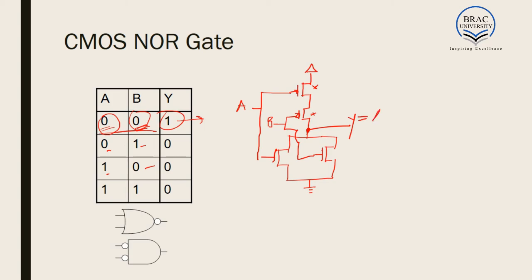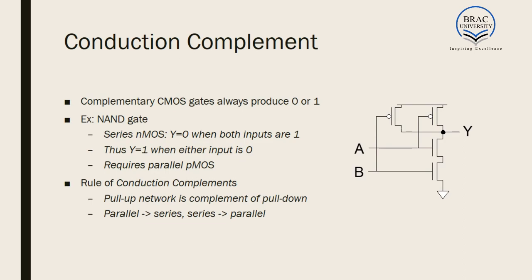It is to be noted that in case of a plus operation, the pull-up network is in series. In case of a NAND gate — that is, in case of multiplication or AND operation — the pull-up network was parallel. This is the conduction complement principle: the pull-up network is complement of the pull-down network. If the connections are parallel in pull-up, they will be series in the pull-down network and vice versa. The pull-down network produces zero output and is comprised only of NMOS; the pull-up network produces one output and is comprised only of PMOS.